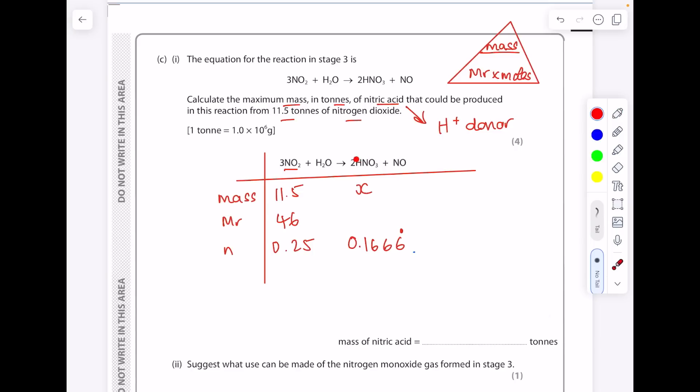Don't round too soon in these answers because the numbers are already small and you'll introduce rounding errors. Now the MR of nitric acid. Remember, we ignore that 2. So we do 1 plus 14 plus 3 lots of oxygen to get 63. And then our final step is to find the mass, which we do MR times number of moles to get 10.5. Remember, my all-in-one video has loads of different mole calculations, but I just wanted to show you that one.